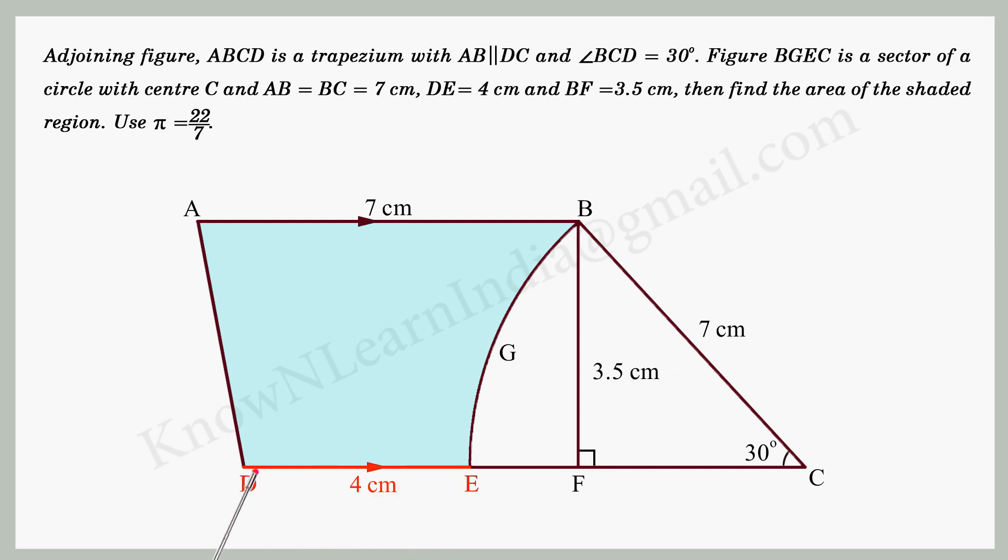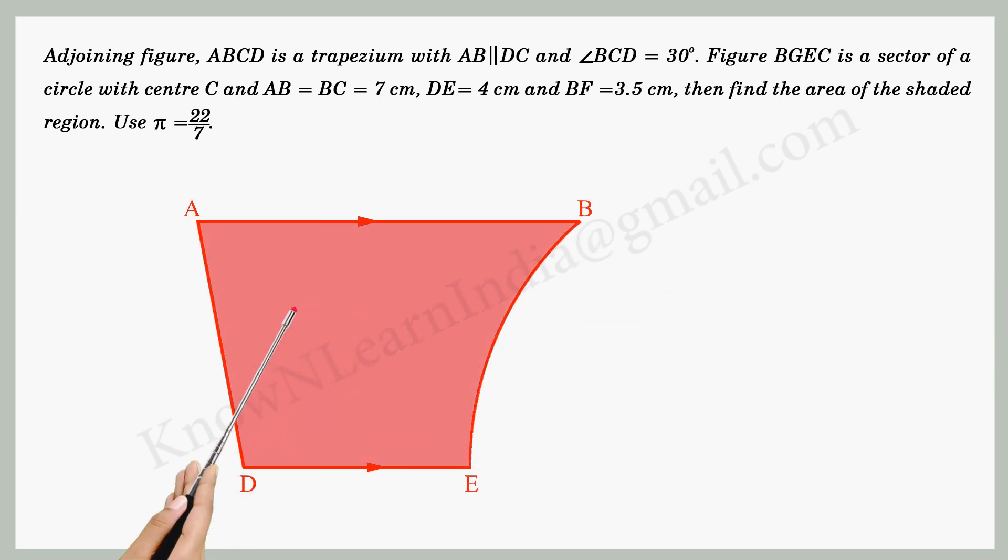cm. DE equals 4 cm and BF equals 3.5 cm. Then find the area of the shaded region. Use pi equals 22 by 7.